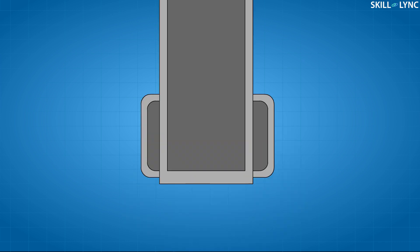Robert Stirling wanted to create a much safer engine that did not have the risk factor of steam engines. This led to the creation of the Stirling engine, also known as the hot air engine. The working of a Stirling engine is fairly simple. Let's assume we have a closed cylinder which is sealed at one end and has a movable piston on the other end.